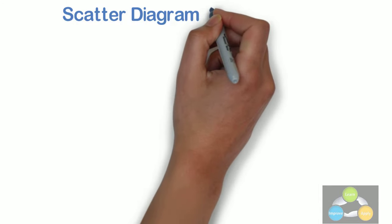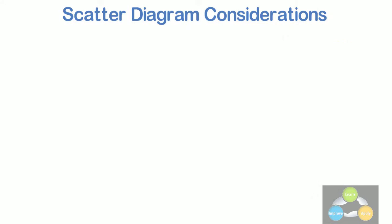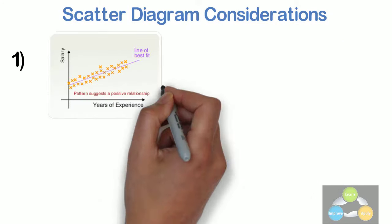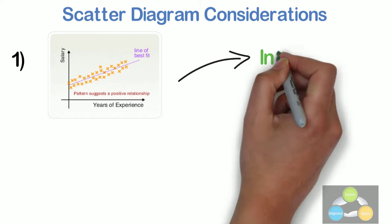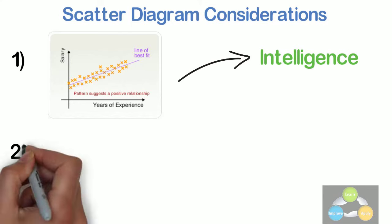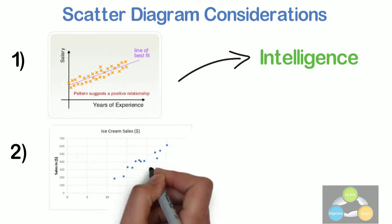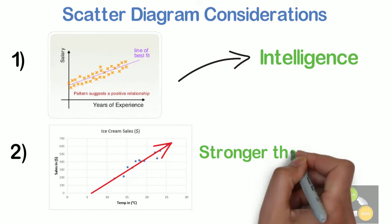Now let's see some of the scatter diagram considerations. Even if the scatter diagram shows a relationship, do not assume that one variable caused the other. Both may be influenced by a third variable. When the data are plotted, the more the diagram resembles a straight line, the stronger the relationship.